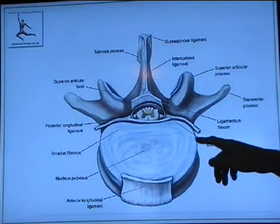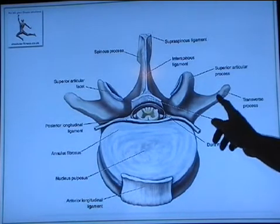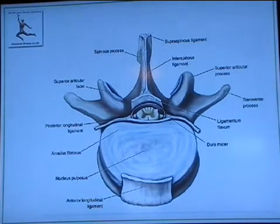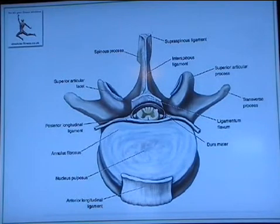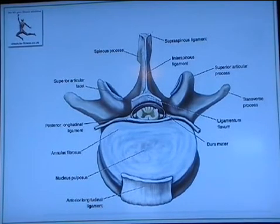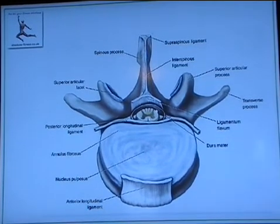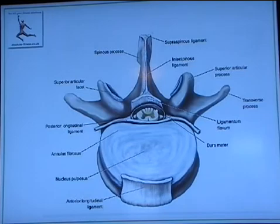There is one more ligament: the transverse ligaments that go in between each transverse process. They're not on the screen and they won't come up in an exam. In an exam you might get the anterior longitudinal ligament or the posterior longitudinal ligament. But those are the main ligaments of the spine.